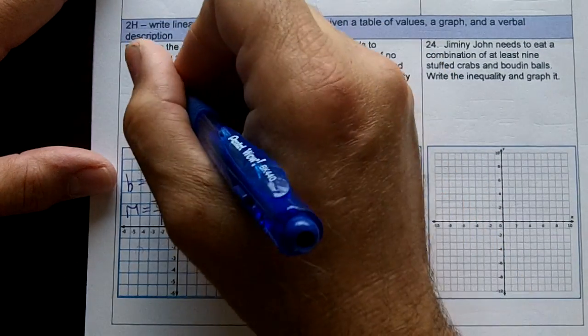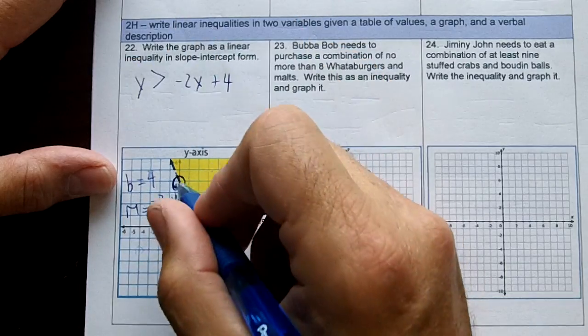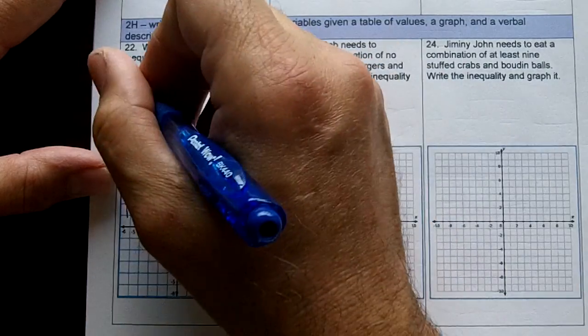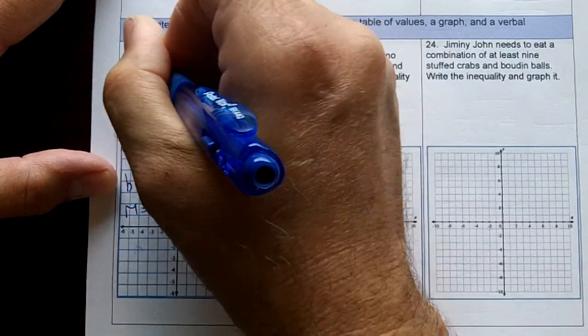Now then, I shaded up, so I got a greater than. The line's dashed, so there's no equal bar. So this right here would be my inequality.